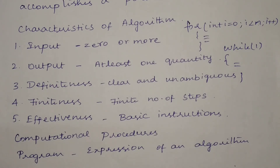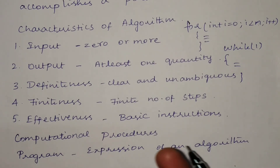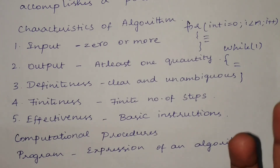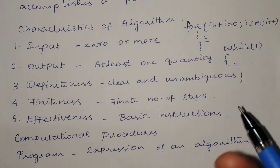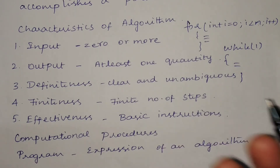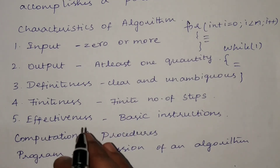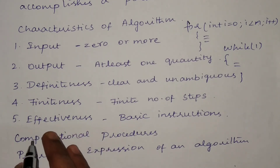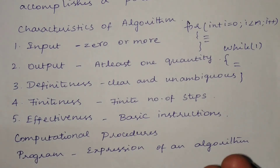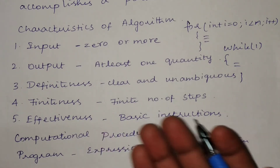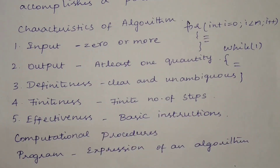The fifth criteria is Effectiveness: your algorithm must contain only basic instructions, such that even with paper and pencil you can determine the result. It should be written in a simple, easily understandable language so that even someone without knowledge of computers or programming languages can understand it. The algorithm must produce the correct output for any set of input values.